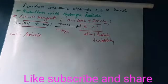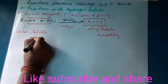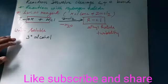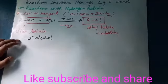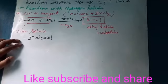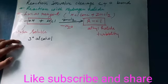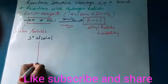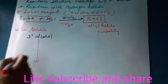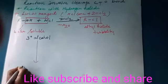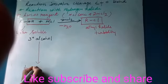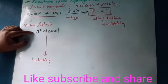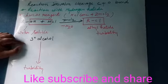In the case of tertiary alcohols, when we do the Lucas test on tertiary alcohols, it quickly gives turbidity. So when we perform the Lucas test — which uses ZnCl2 and HCl — on tertiary alcohols, we quickly get turbidity.